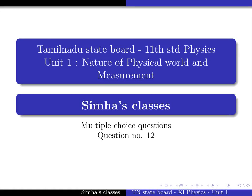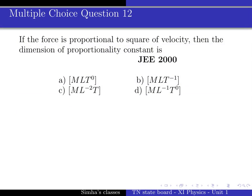Question number 12: If the force is proportional to square of velocity, then the dimension of proportionality constant is. The question is very simple. Let's find the answer.